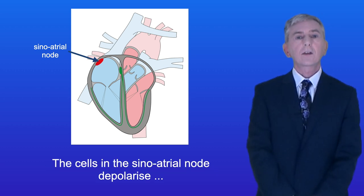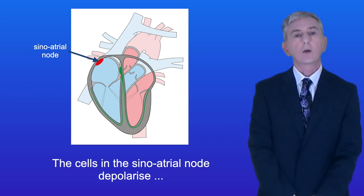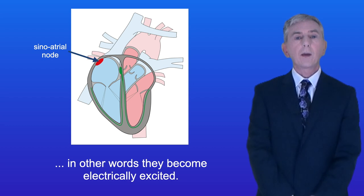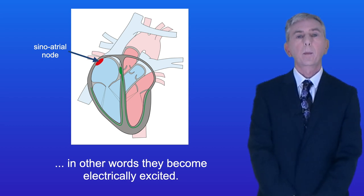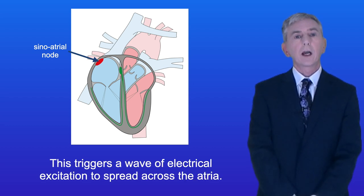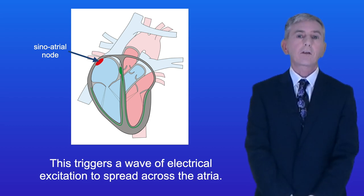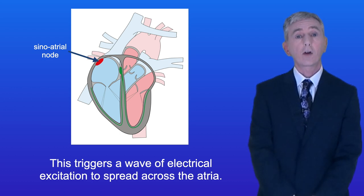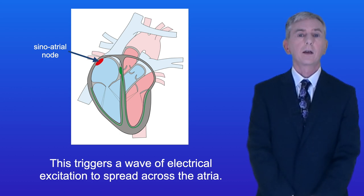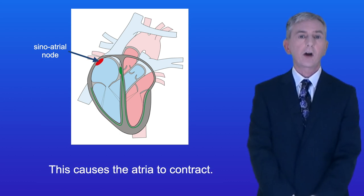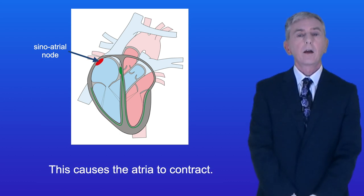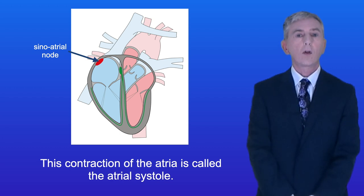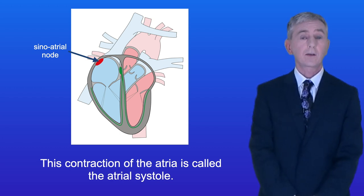The cells in the sinoatrial node depolarize — in other words they become electrically excited. This triggers a wave of electrical excitation to spread across the atria and this causes the atria to contract. This contraction of the atria is called the atrial systole.